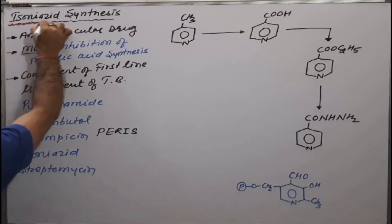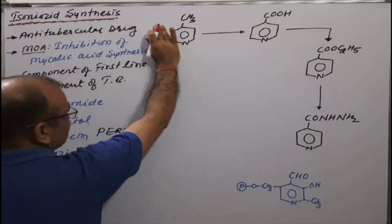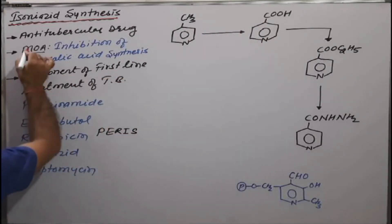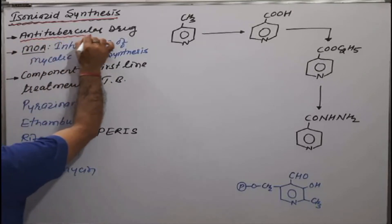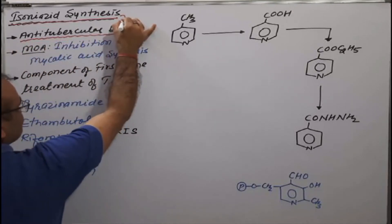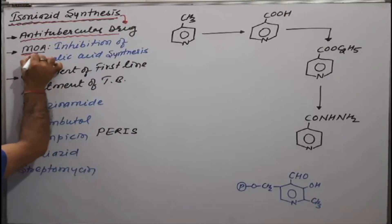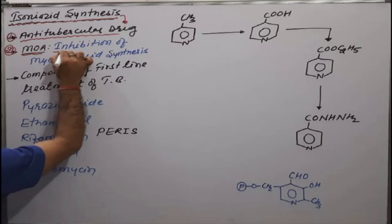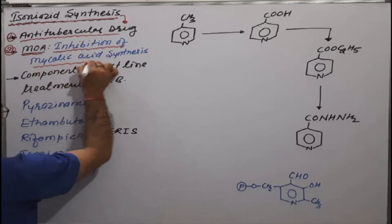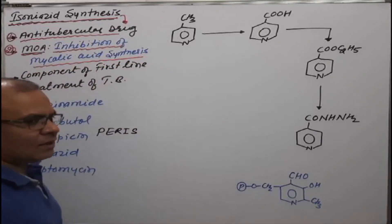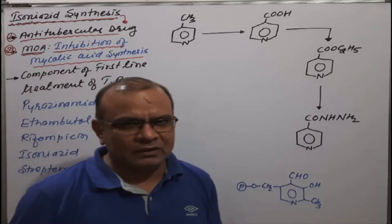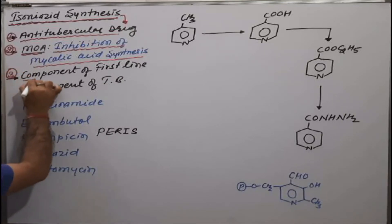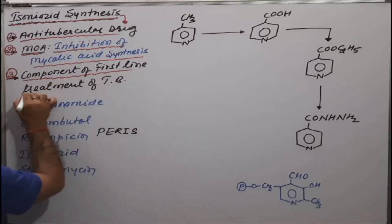Before going to the isoniazid synthesis, we will first discuss that it belongs to the anti-tubercular drug category. The mechanism of action is inhibition of mycolic acid synthesis, which causes the death of Mycobacterium tuberculosis.